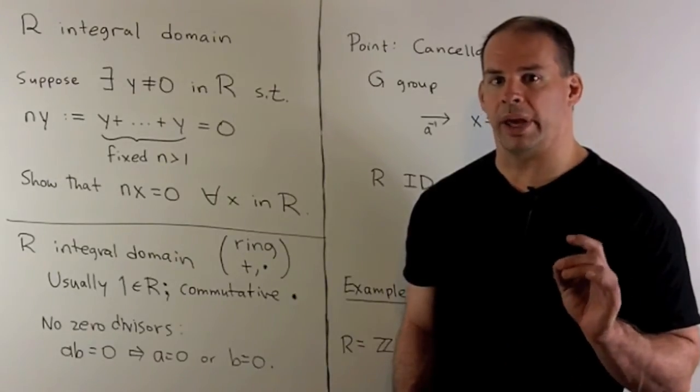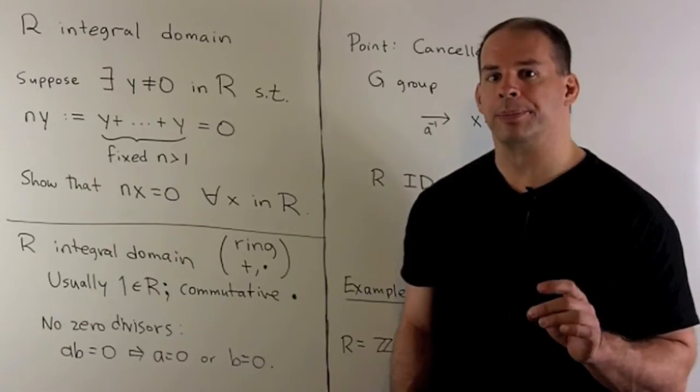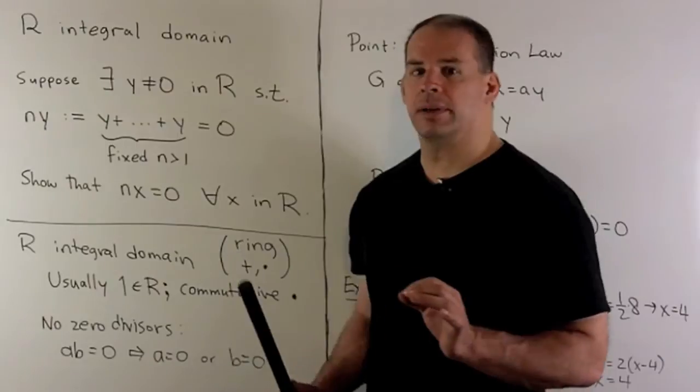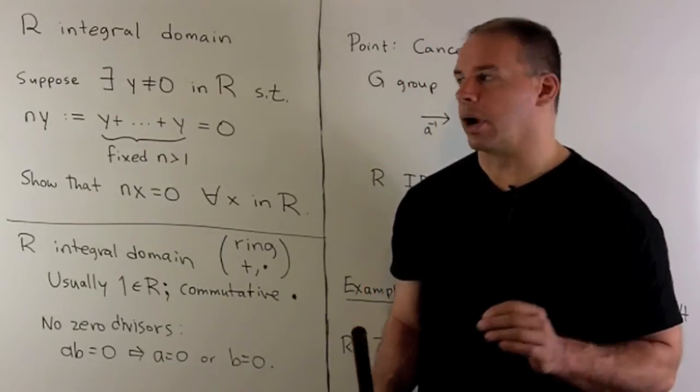Let R be an integral domain. Suppose there exists a non-zero y such that we add y to itself n times, where n is an integer bigger than one, and we get zero.